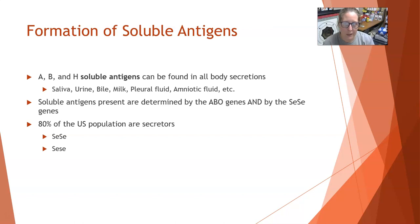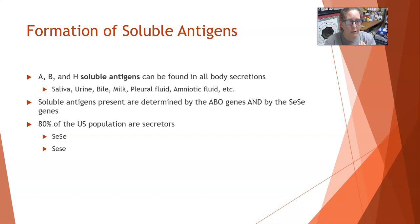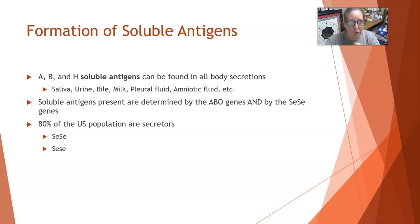Some examples would be saliva, urine, bile, milk, oral fluid, amniotic fluid, et cetera. If it's a body fluid, you can pretty much detect a soluble antigen in there if the person is a secretor. The presence of the soluble antigen is determined by the ABO gene — so if you are type A, you would have an A soluble antigen present — but also by the secretor genes, the SE/SE genes. About 80% of the U.S. population are secretors, meaning 20% of the population are not.